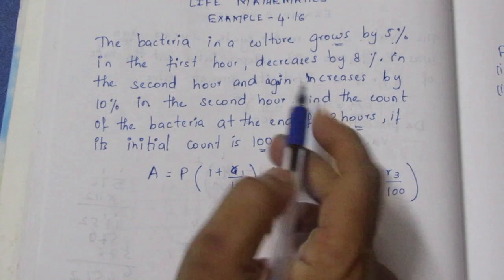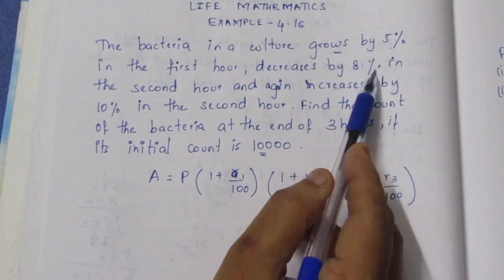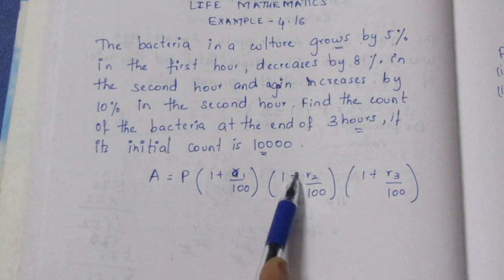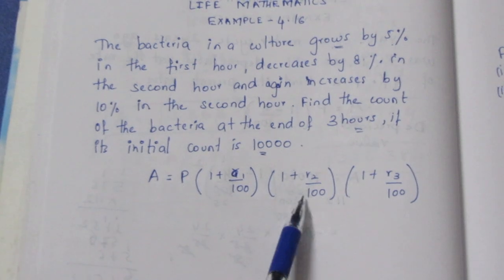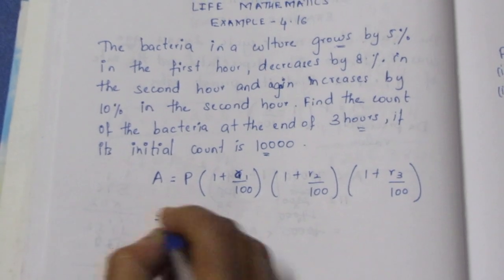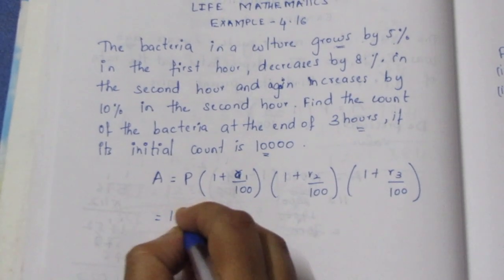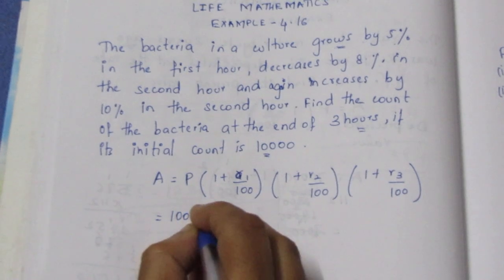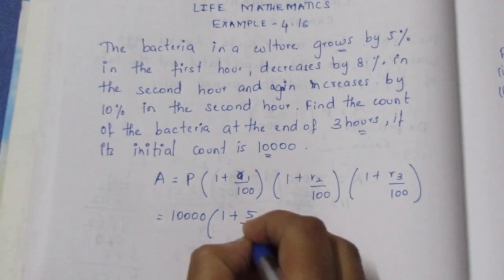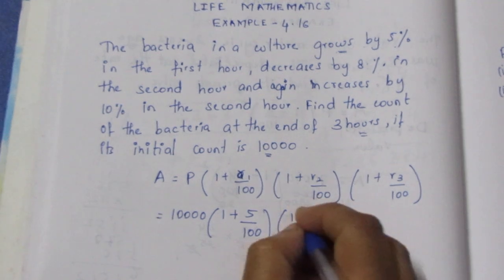The first rate is 5% increase, so we use a plus sign. The second rate is 8% decrease, so we use a minus sign. The third is an increase, so we use a plus sign again.